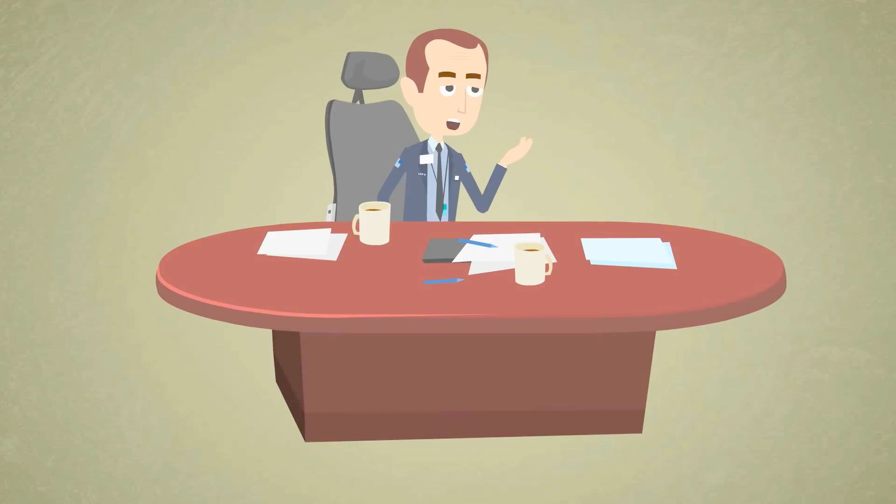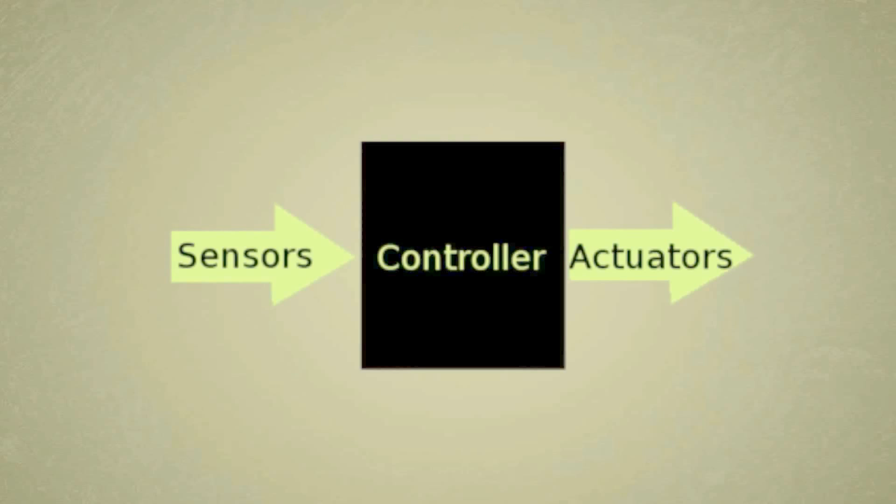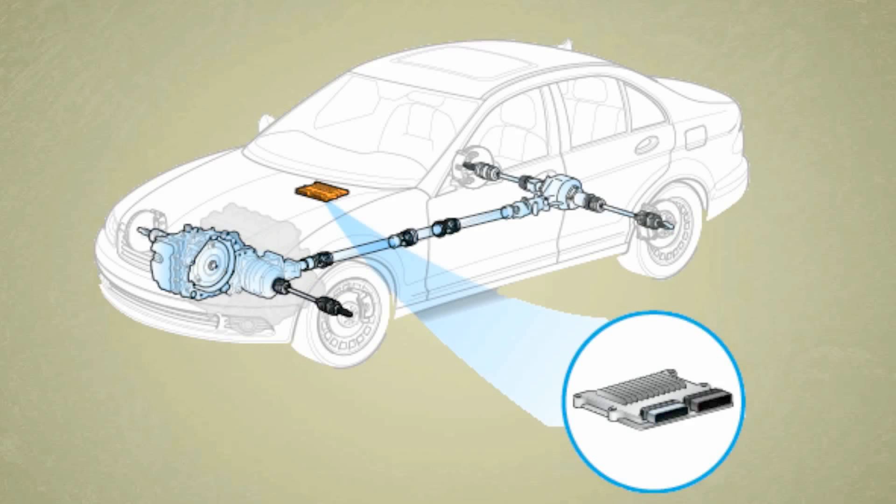So what the ECM does, the main function of this controller is to get information from sensors and run certain actuators. The vehicle computer uses these inputs to adjust its settings so the vehicle can run in accordance with your driving habit.